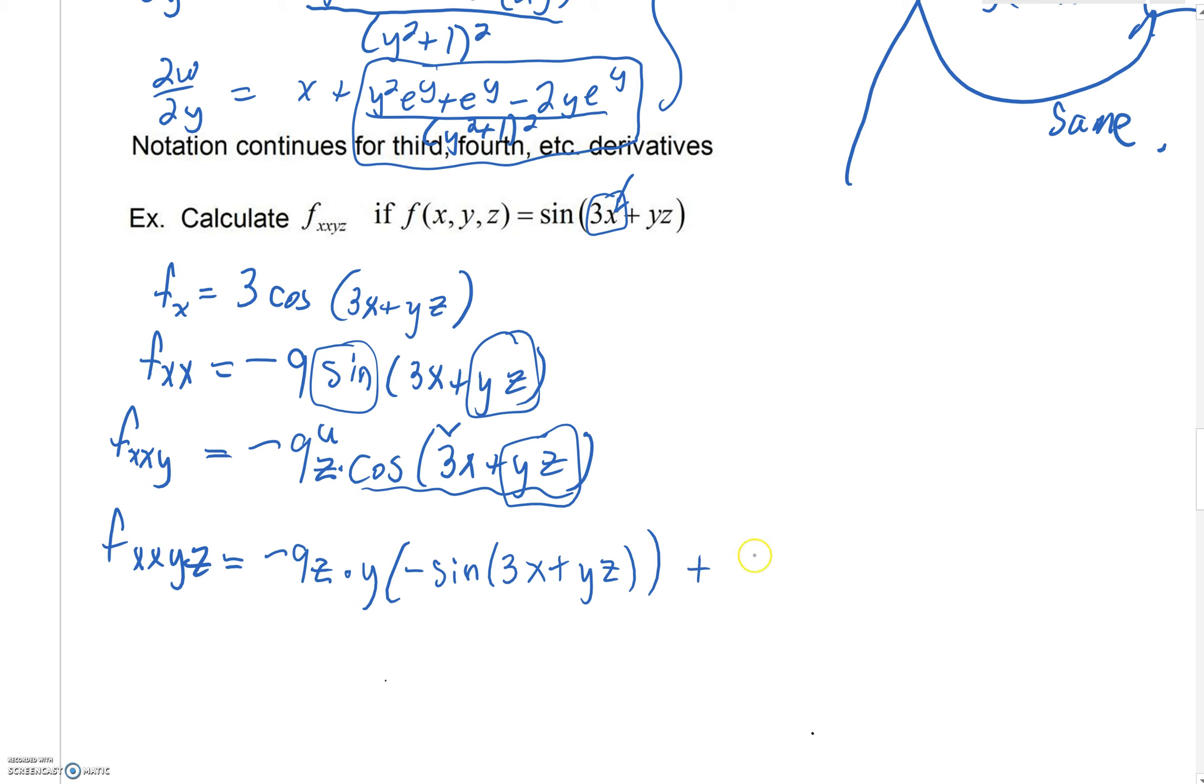Then we'll say plus. Well, then we need u prime with respect to z. The derivative of negative 9z with respect to z is negative 9. We'll have cosine of 3x plus yz.